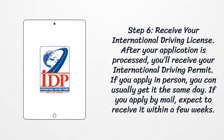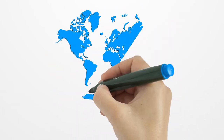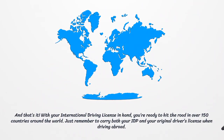Step 6: Receive your international driving license. After your application is processed, you'll receive your international driving permit. If you apply in person, you can usually get it the same day. If you apply by mail, expect to receive it within a few weeks.